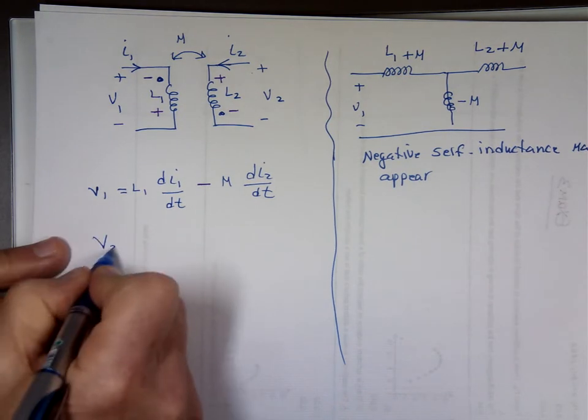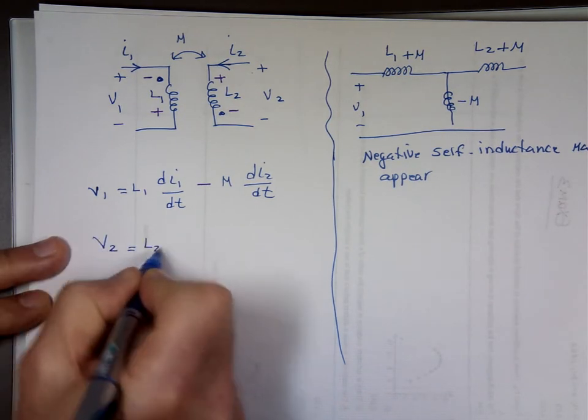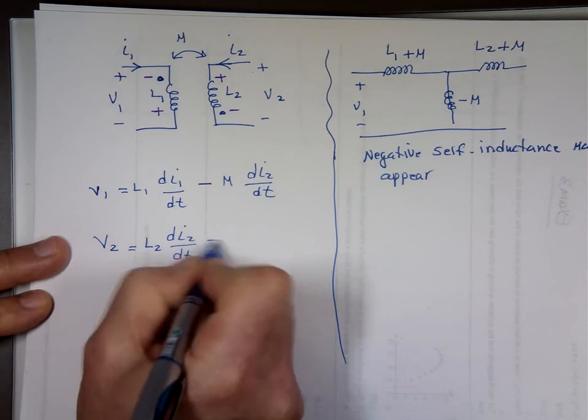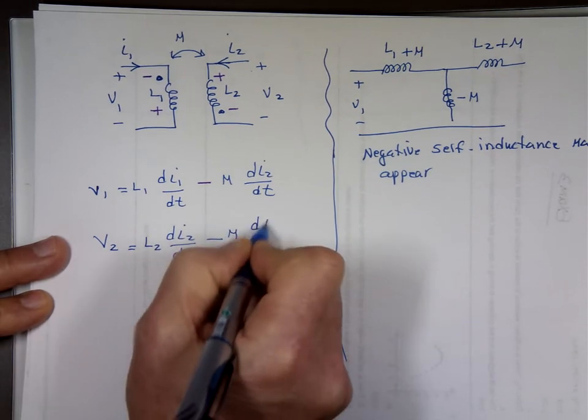And if we do V2, it's going to be L2, Di2, Dt, minus M, Di1, Dt.